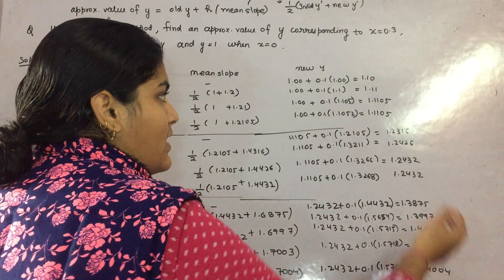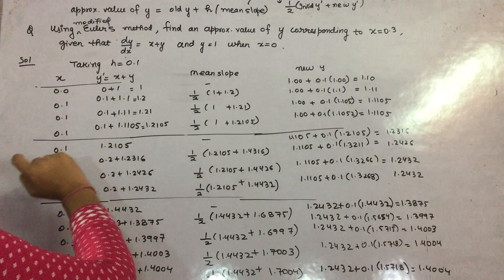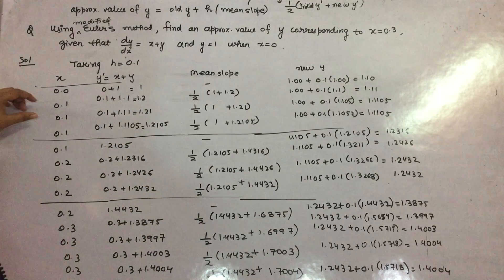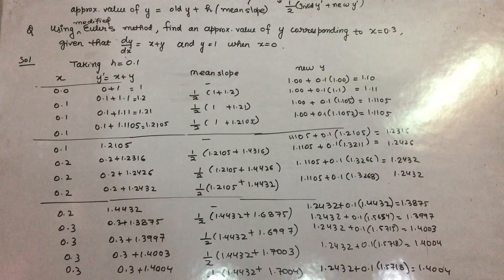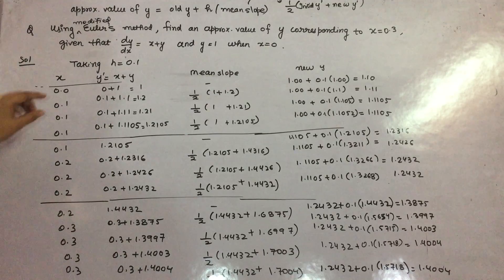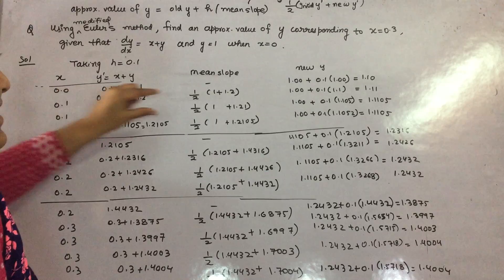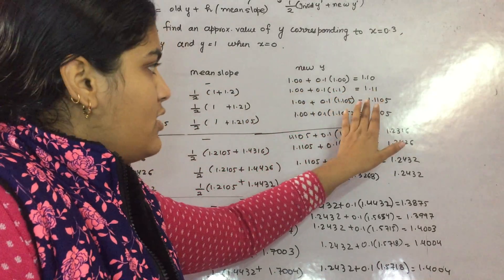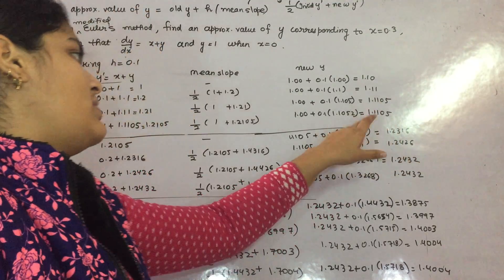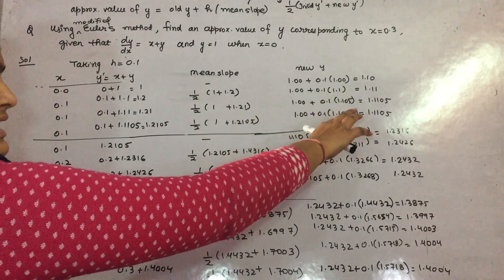You can see we are taking x as 0, 0.1, 0.1, 0.1 — three times — because the limit is 0 to 0.3 with a very short interval. You have to repeat the iterations until you get the same value. When you get the same value, that is your converged result; here 1.1105 is your next step value.